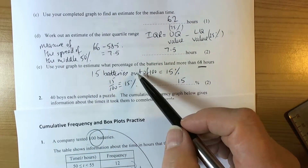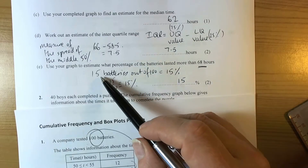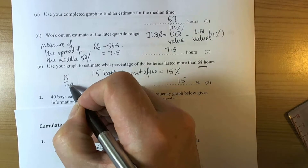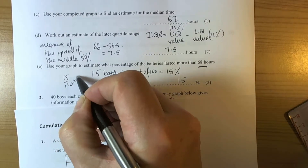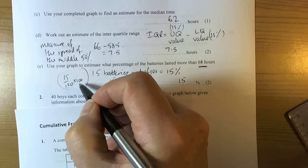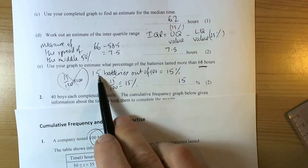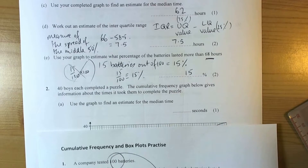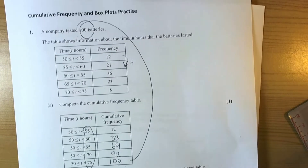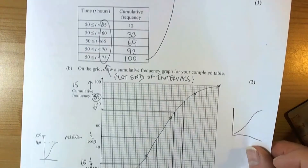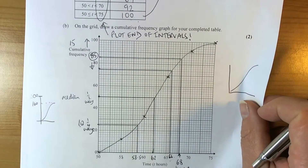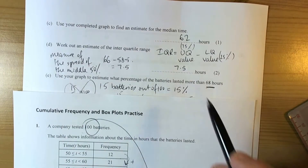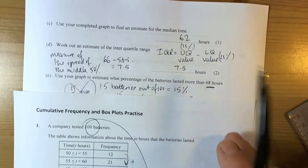If the cumulative frequency were say 120 and you found 15 batteries, you'd do 15 over 120 times 100 to get the percentage. But in this case it was straightforwardly out of 100. That's one example of the kind of questions asked on cumulative frequency and how to use the graph to estimate values and work with interquartile range formulas.